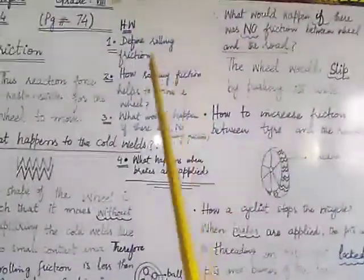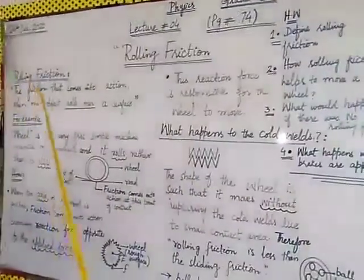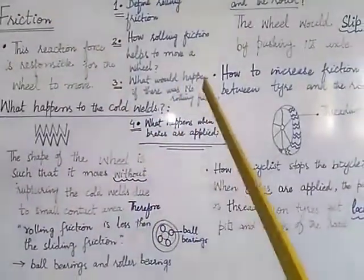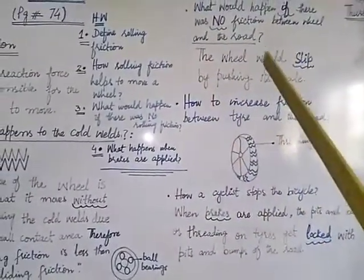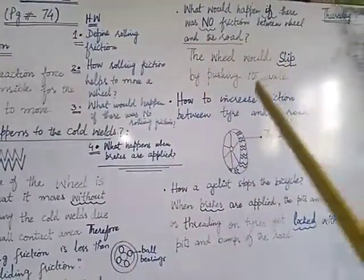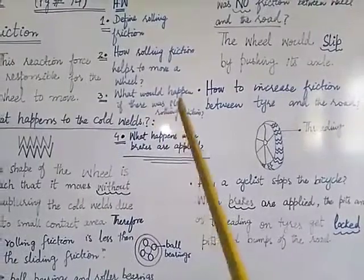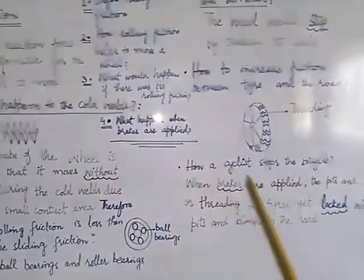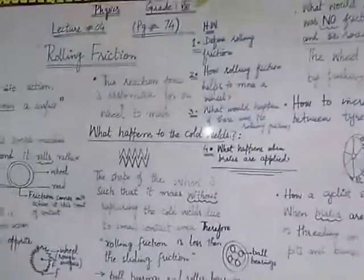Your today's homework is: write down the answer to 'Define rolling friction.' How does sliding friction help to move a wheel? What would happen if there was no rolling friction? And the fourth question is: what happens when brakes are applied? Write down these answers in your notebook. You will also read page number 74 and write the answers in a proper way. Thank you class, Assalamualaikum.